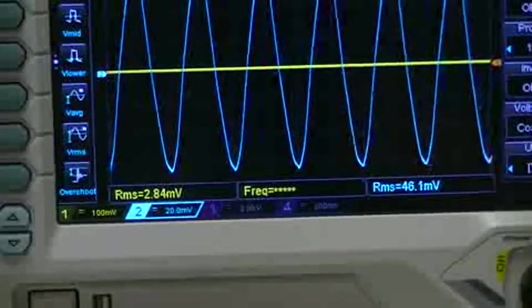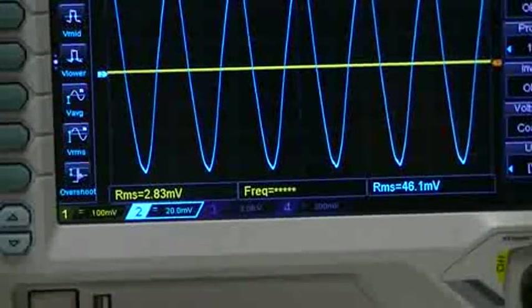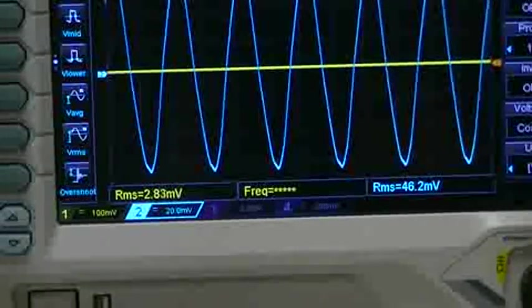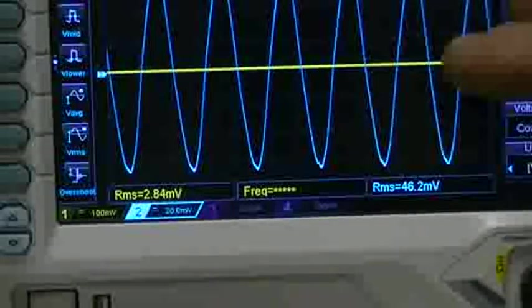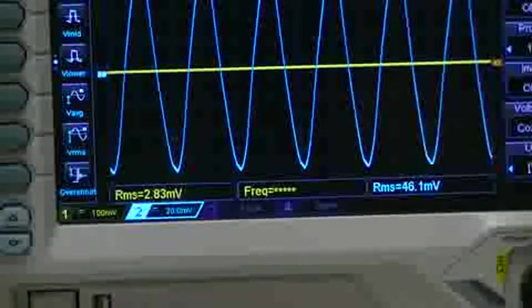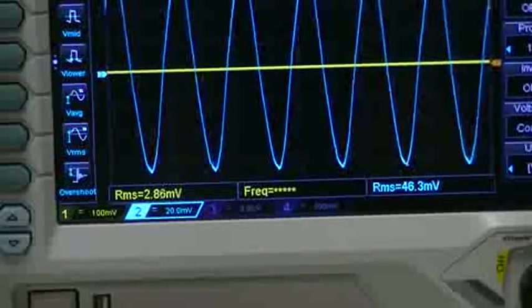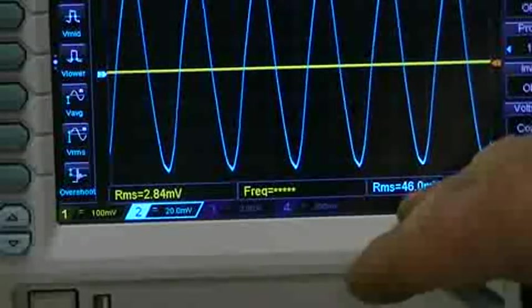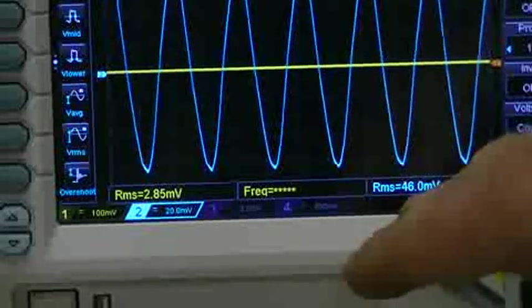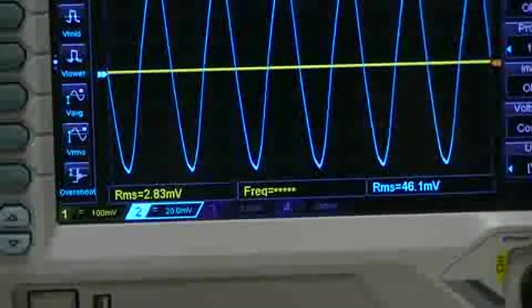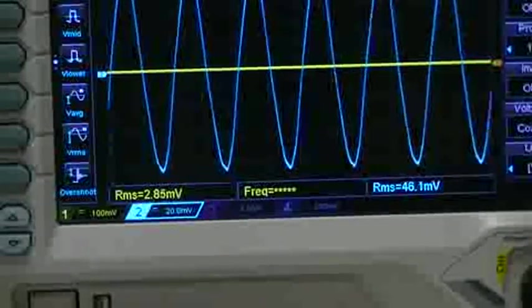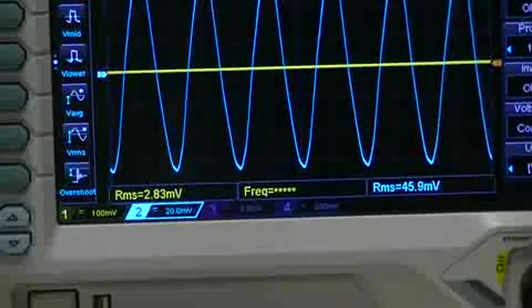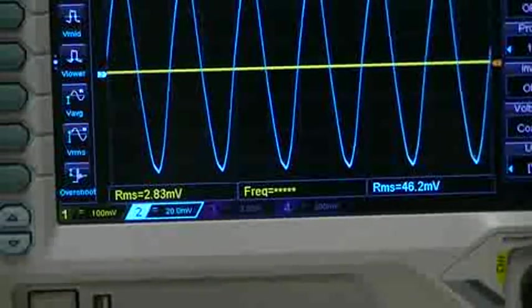Now I'm triggering off channel 1, I actually perhaps should trigger off channel 2 in this part of the test. I will leave it as it is, so we're triggering off channel 1 so as to keep it the same as the first half. But you can see here quite clearly we've got about 46 to 46.3 millivolts across our 100 ohm resistor, so the magnetic field at the moment is extremely weak. That's hardly anything coming off there.